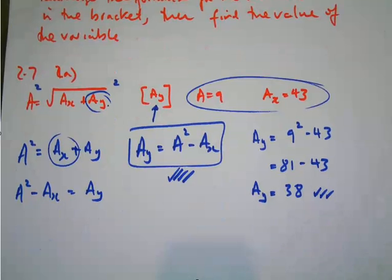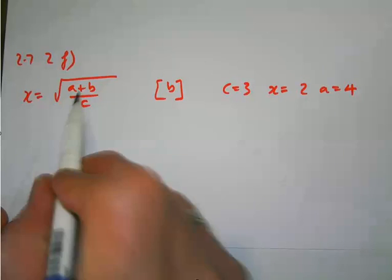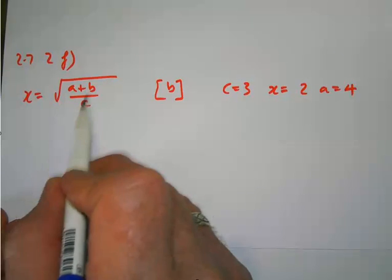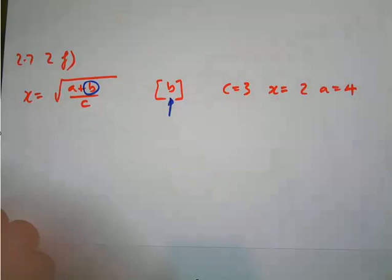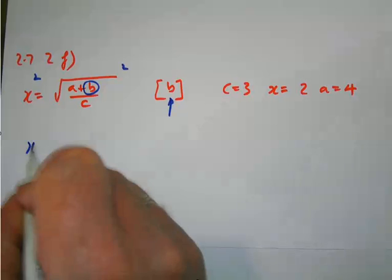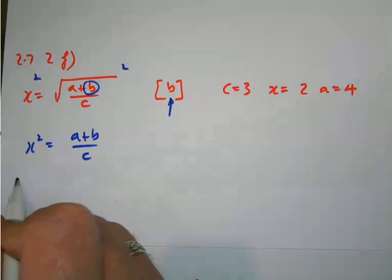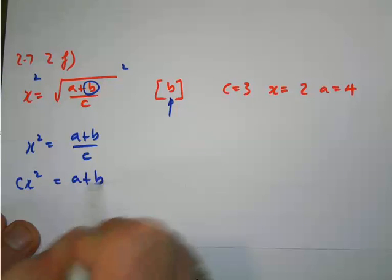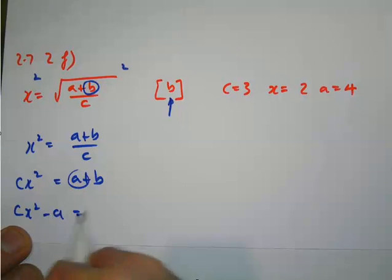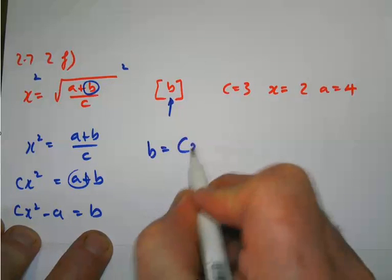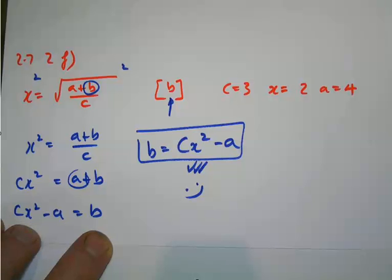Okay, looking at 2f, x equals the square root of a plus b all divided by c, and I'm going to make b the subject. There's b there. Again, if I square both sides, that will get rid of the square root. So x squared will equal a plus b all over c. Then if I move the c, it's going to be c x squared equals a plus b. And then I move the a to the other side, and c x squared minus a should equal b. So my answer is b equals c x squared minus a, and there is the formula rearranged for the subject b.